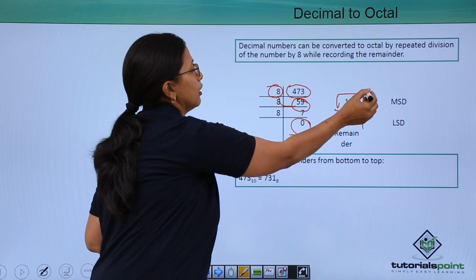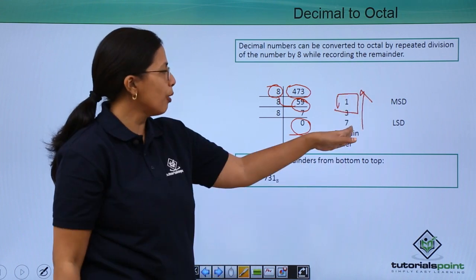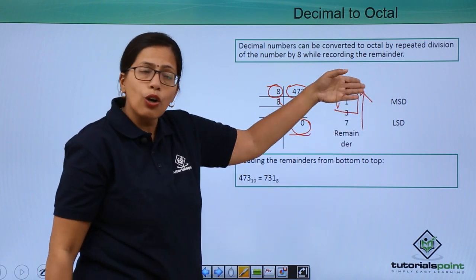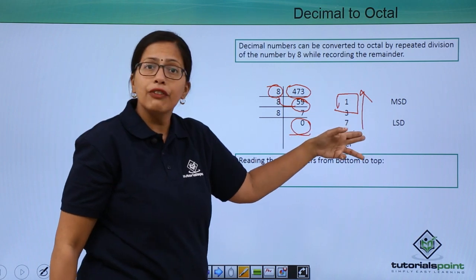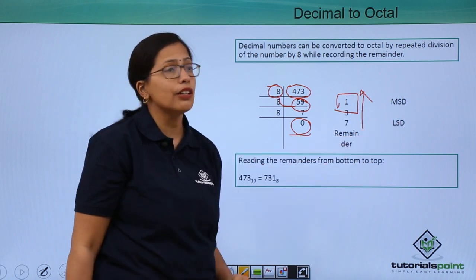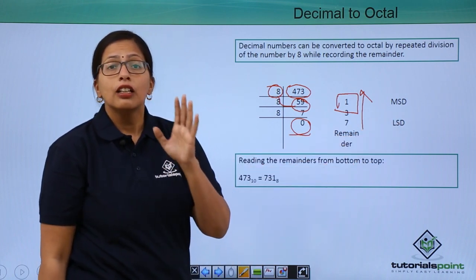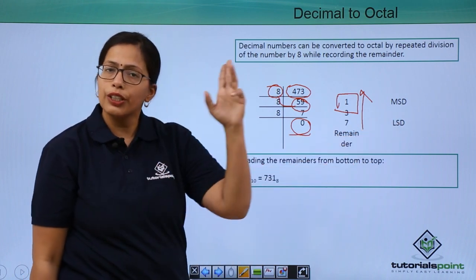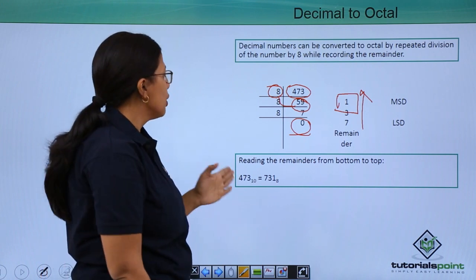After this, we will again read it from bottom to top, that is the least significant digit to the most significant digit. Just remember, I am not saying here LSB, the least significant bit. Bit is only used for the binary number system.